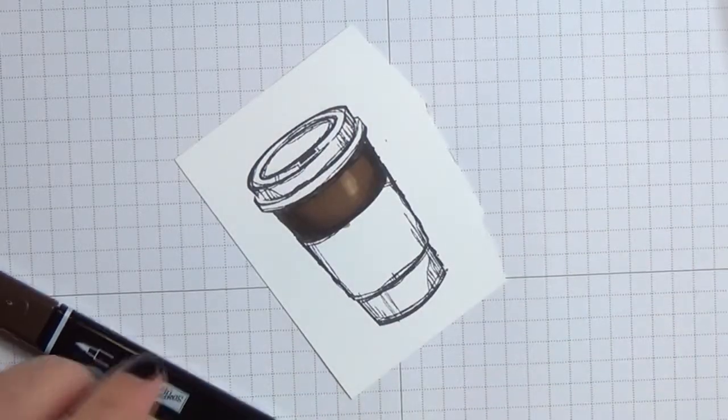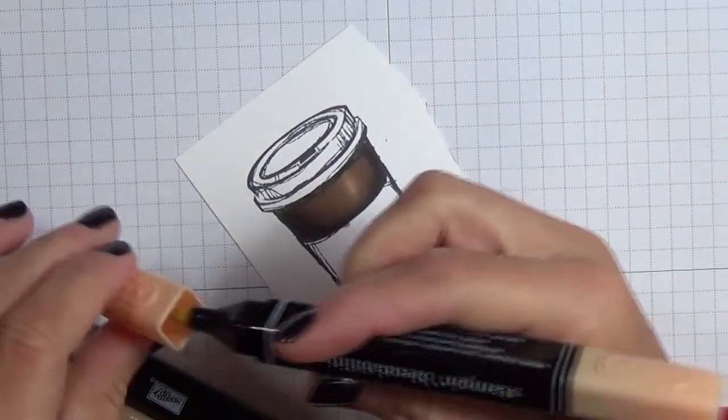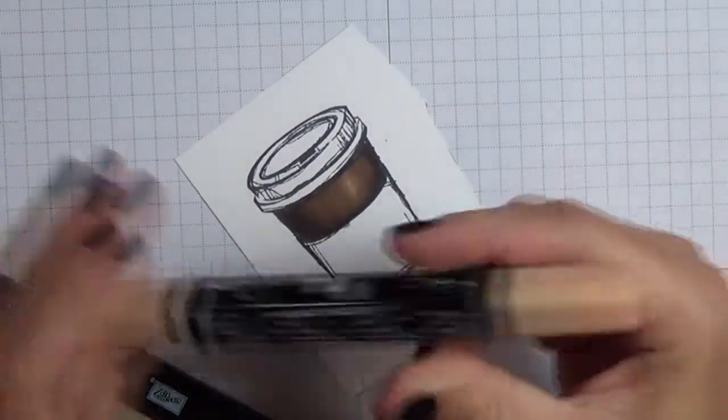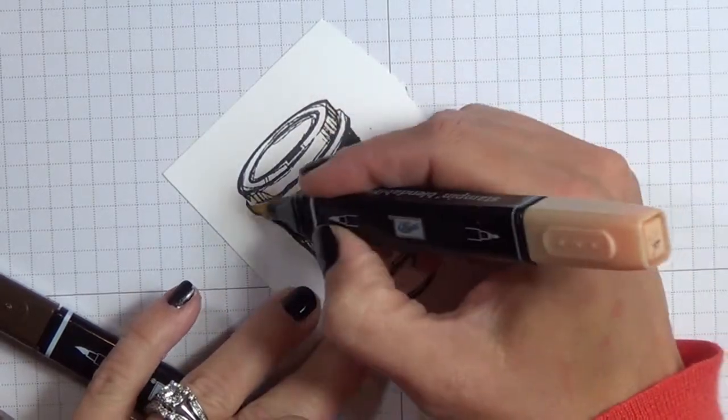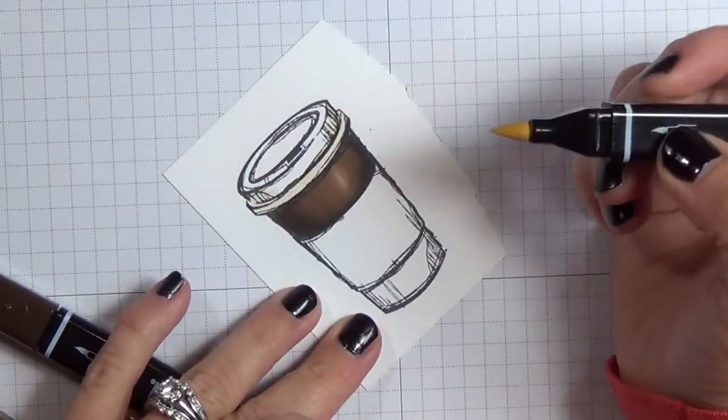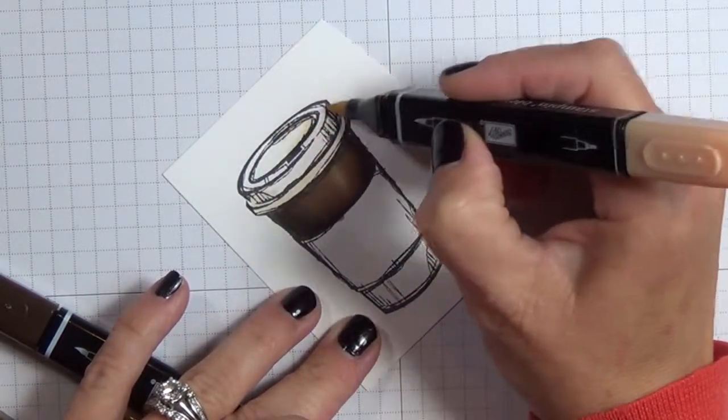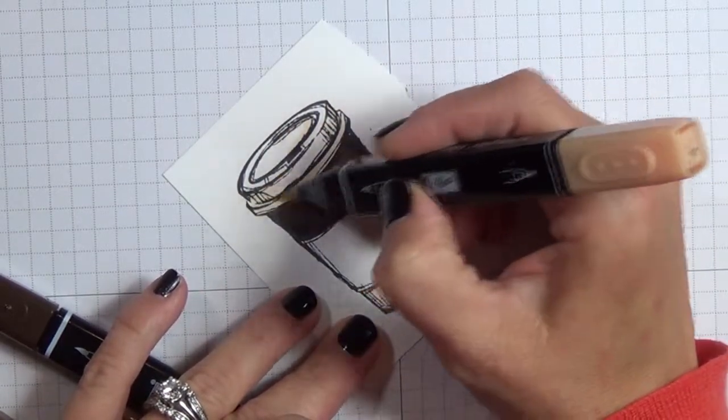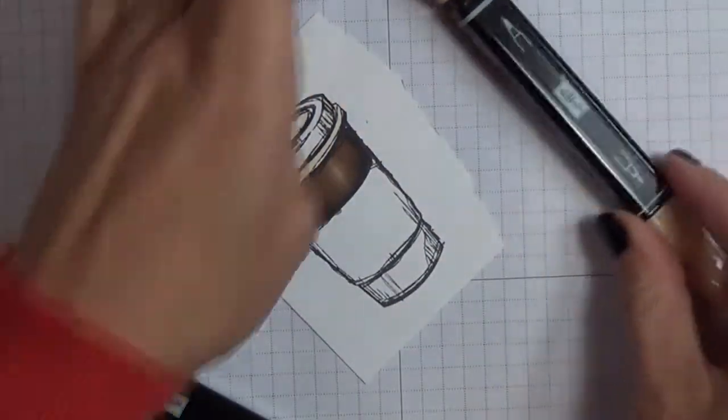I might grab this ivory from the skin tones assortment. I'm just going to use it to kind of highlight my lid. All right, leave that one there.